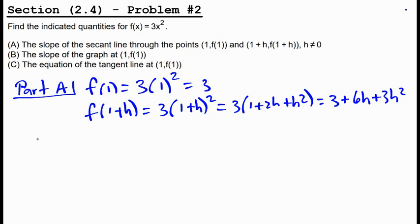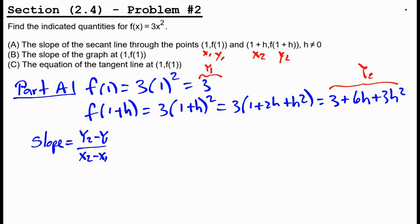Now we can say the slope for the secant line is y2 minus y1 over x2 minus x1. And we're going to treat this as x1, y1, x2, y2. So I'm going to plug this in for my y2, and we're going to plug this in for our y1, and we're going to plug in 1 plus h for our x2 and 1 for our x1.